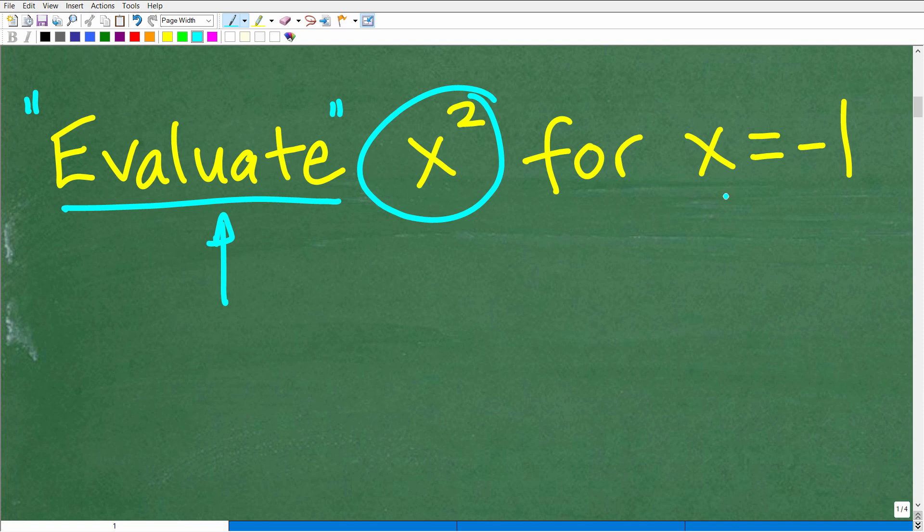And again, we need to understand what this word means: evaluate. So evaluate means that we're going to assign a value for this variable x. In this case, it's going to be negative 1, and we want to plug in this negative 1 into this expression and then determine what is this equal to. So we're going to have to simplify this numeric expression to get some final number. Take your variable, whatever number is assigned to that variable, plug it in, and then simplify and get a final number.